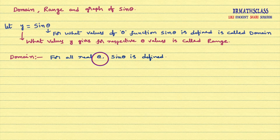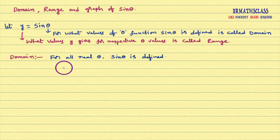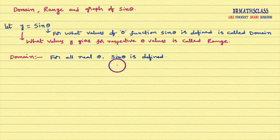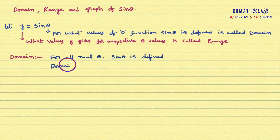For all real values of theta, sine theta is defined. You take any real value — sine 1, sine 1 degree, sine 30 degrees, sine 1 crore degrees, sine 10 pi, sine 1000 pi — all those things are defined. Sine function is defined for all real numbers. So what is the domain of this function? Domain of sine function is all real numbers.